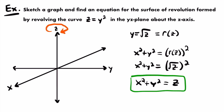That is the equation representing the surface of revolution formed by revolving this curve around the z-axis. That takes care of part of this problem. We also want to sketch a graph. If you know your special surfaces from previous lessons, you might recognize this equation as an elliptic paraboloid. When you have an equation where two variables are squared and positive, and one variable is only to the first power, you have an elliptic paraboloid directed along the axis of the first-power variable.